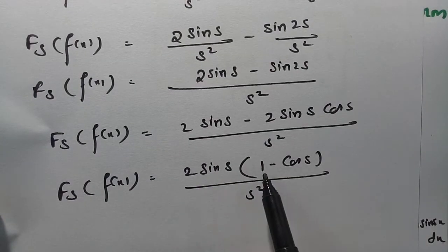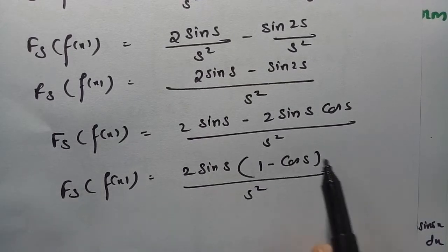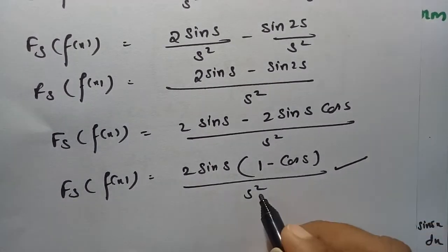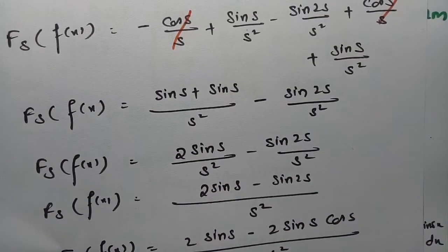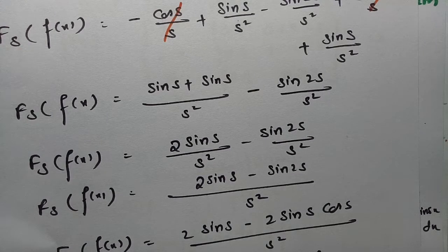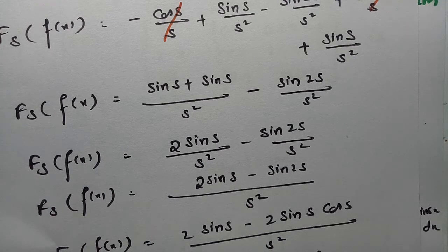The Fourier sine transform of f(x) is 2 sin(s) times (1 minus cos(s)) divided by s squared, which is exactly what was asked to show. Thank you so much for watching and staying till the end. There are many more videos coming soon. I hope this video was informative — stay connected, like, share with friends, and subscribe!